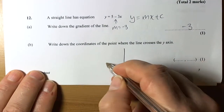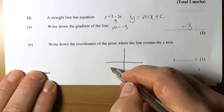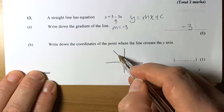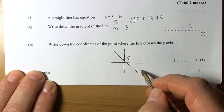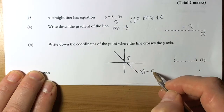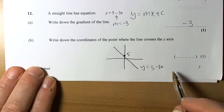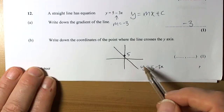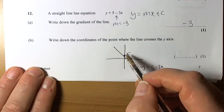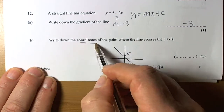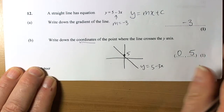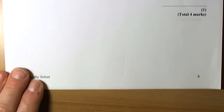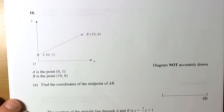The coordinates of the intercept point: the line has a negative gradient going through 5, so the intercept is at 5. The coordinates of that point are (0, 5).